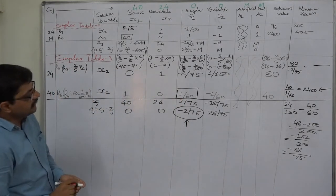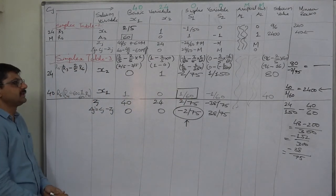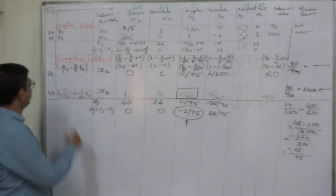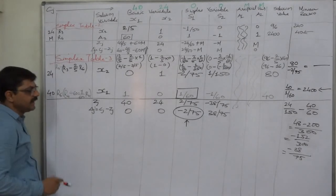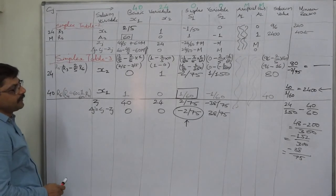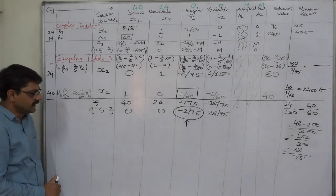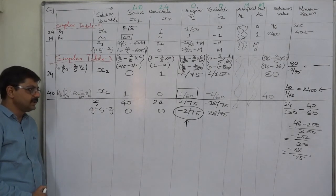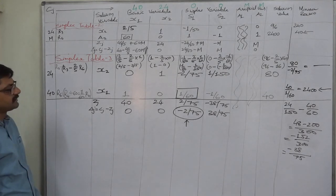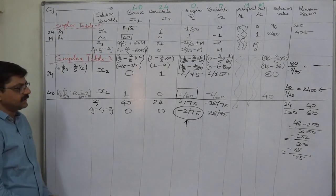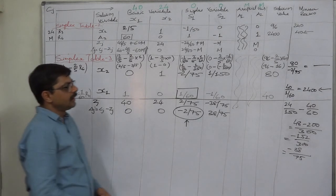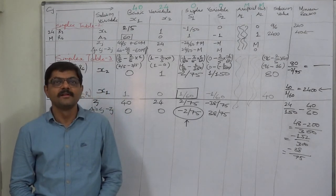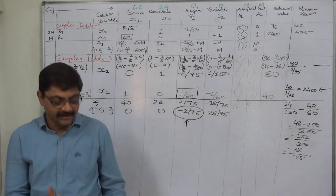We need at least one more simplex table. In that we will prepare R7 and R8; R8 will be the replaced row, taking the place of R6. R8 = R6 divided by 1/60, or equivalently, multiply R6 by 60. In the next video lecture, we are going to prepare Simplex Table 4 of this problem. Thank you very much.